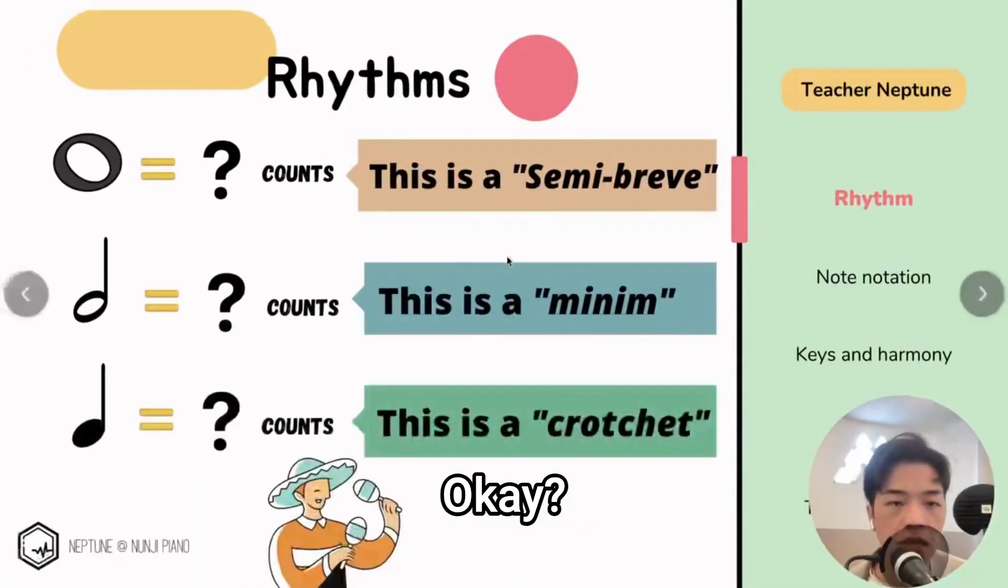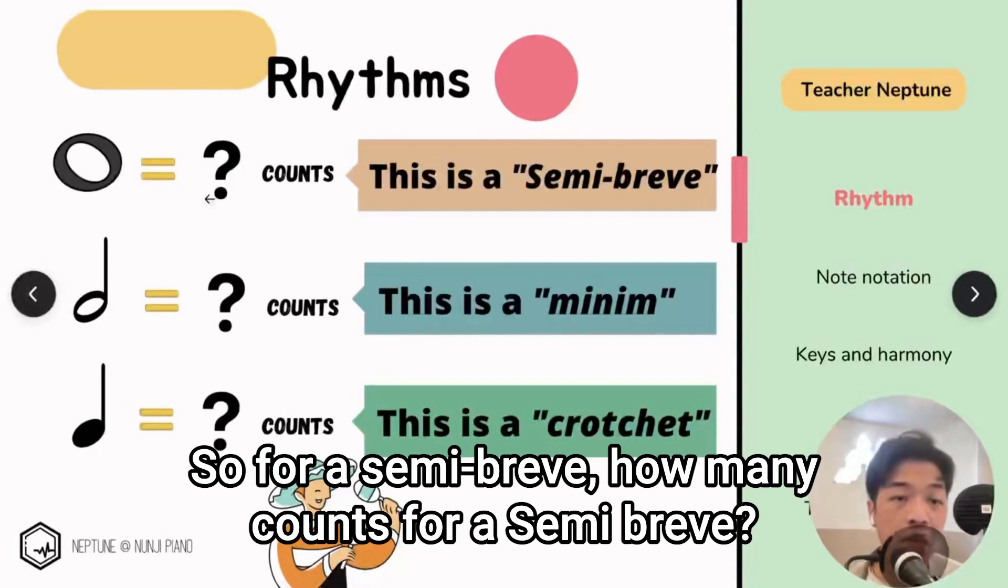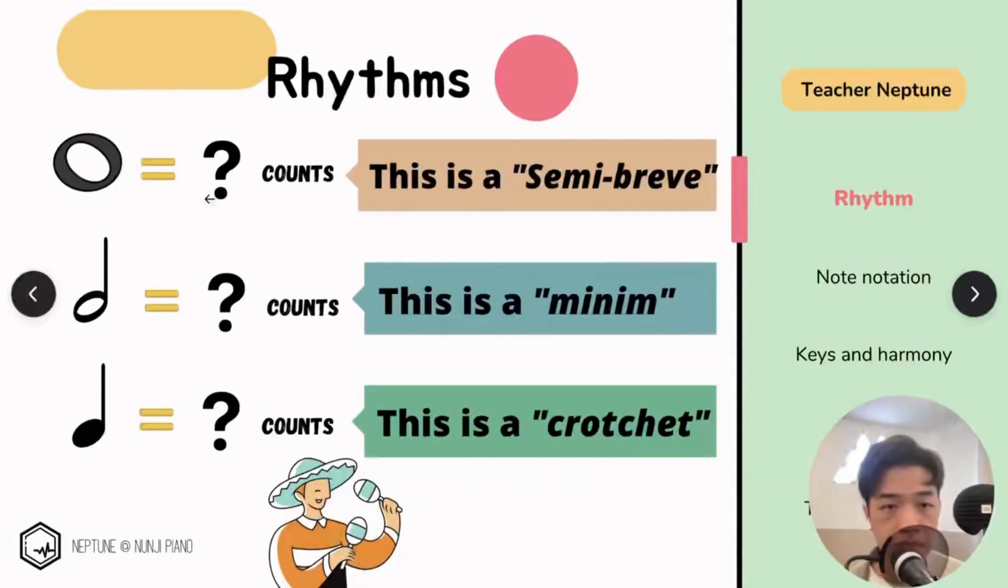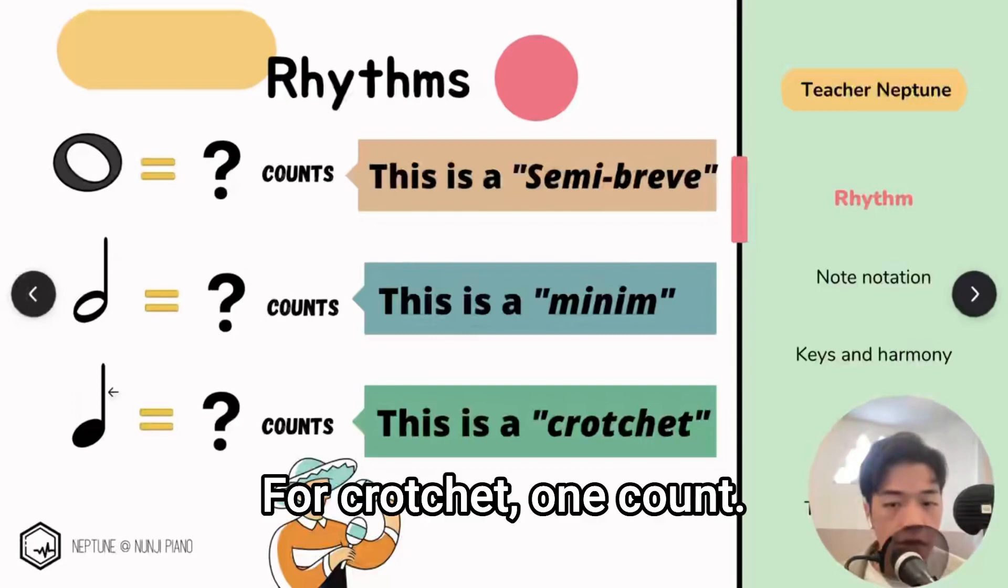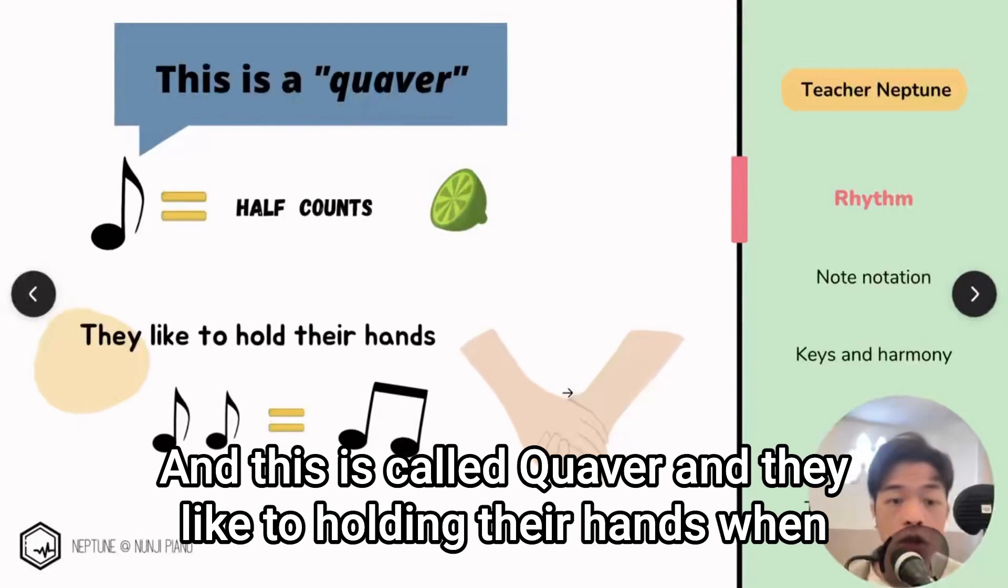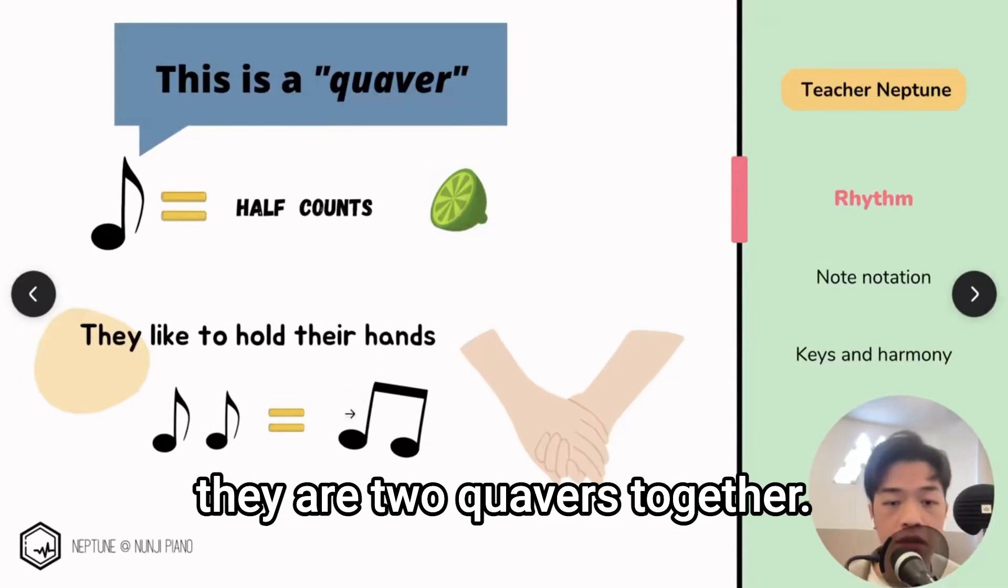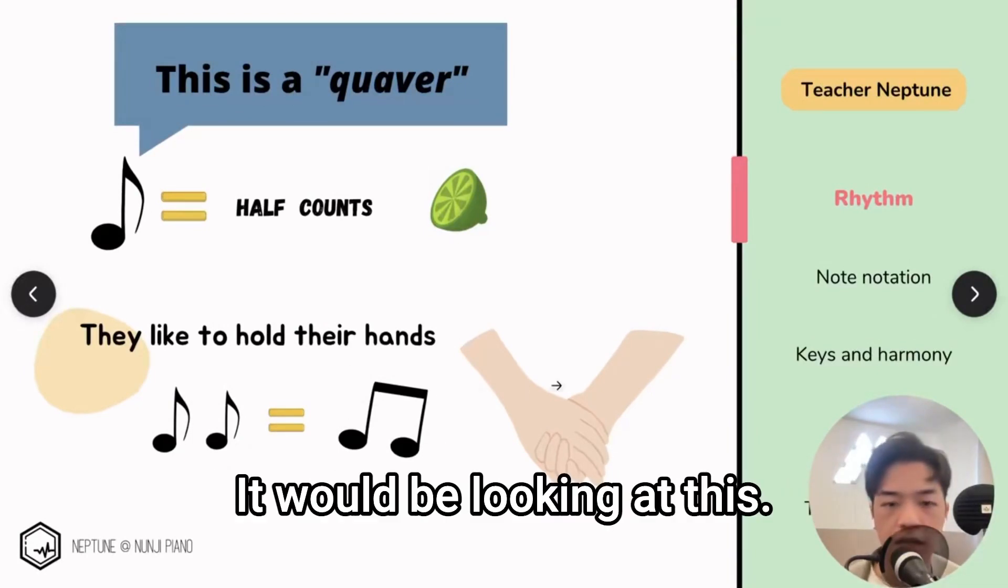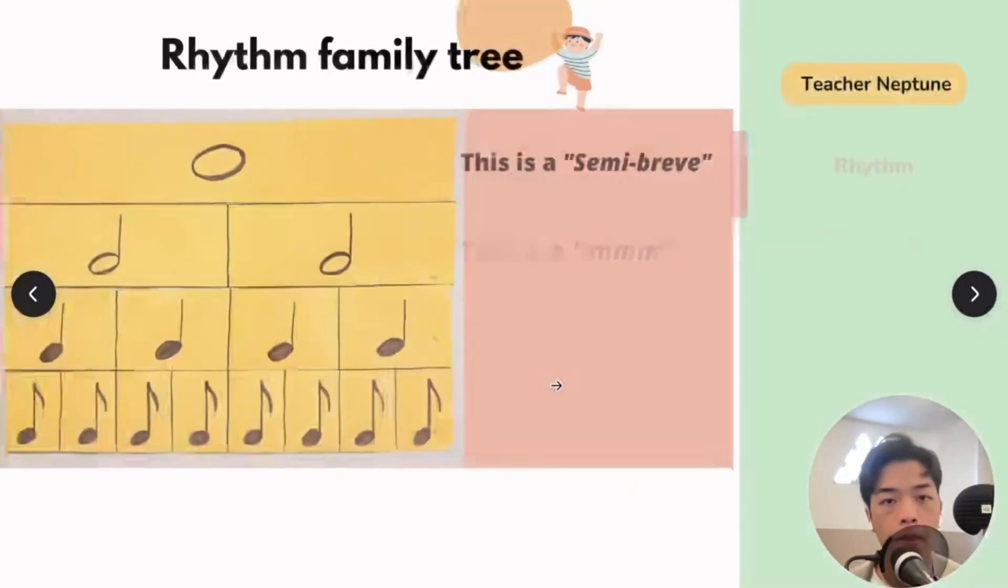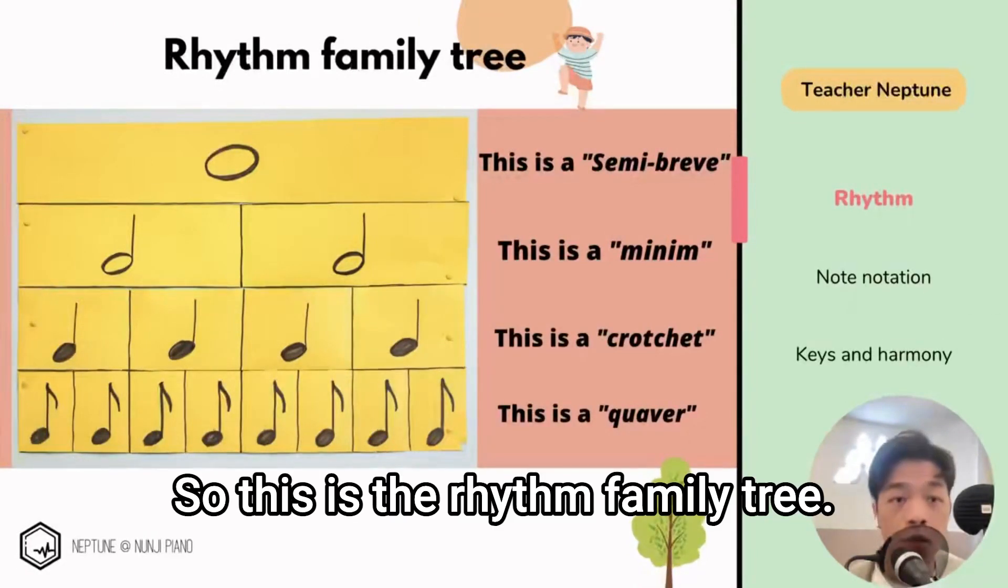Okay, so for a semi-breve, how many counts? Four counts, or minimum two counts. For crotchet, one count. And this is called a quaver, and they like to holding their hands when there are two quavers together.